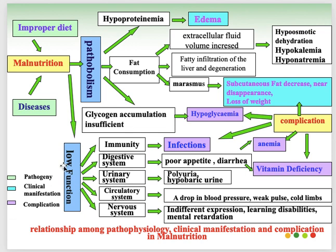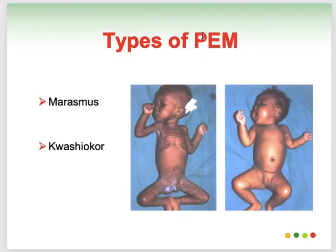In terms of pathophysiology: hypoproteinemia leads to edema, fat consumption leads to marasmus, and vitamin D deficiency leads to rickets. Complications of malnutrition include hypoglycemia, anemia, and infections. There are two types of protein energy malnutrition — one is called marasmus and one is called kwashiorkor. Globally, one third of childhood deaths are attributed to undernutrition. The WHO recommends nutritional status be expressed as weight for height, mid-arm circumference, or height measurements.